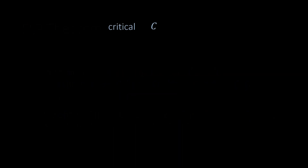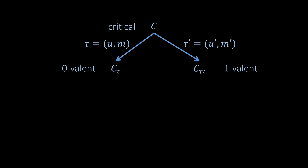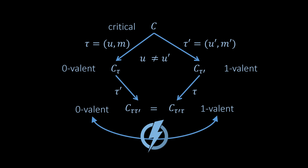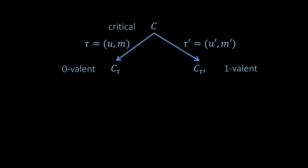Let's consider a critical configuration C. Since the configuration is critical, there must be a transition that leads to a 0-valent configuration, and there must also be a transition that leads to a 1-valent configuration. Let's assume those transitions happen because messages are received on different nodes. If the other message is now received in the 0-valent configuration, the resulting configuration must be 0-valent as well by definition. Likewise, any transition on a 1-valent configuration must lead to another 1-valent configuration. However, if messages are received by different nodes, we must get identical configurations. This is a contradiction because a configuration cannot be both 0-valent and 1-valent. So we conclude that the two transitions must happen on the same node.